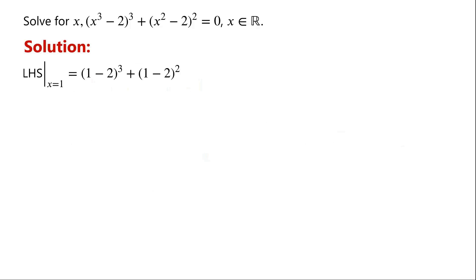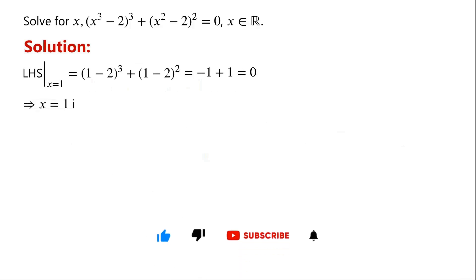Plus 1 minus 2, all squared, which is equal to negative 1 plus 1, which is 0, which equals the right-hand side of the equation. So x equals 1 is a solution.